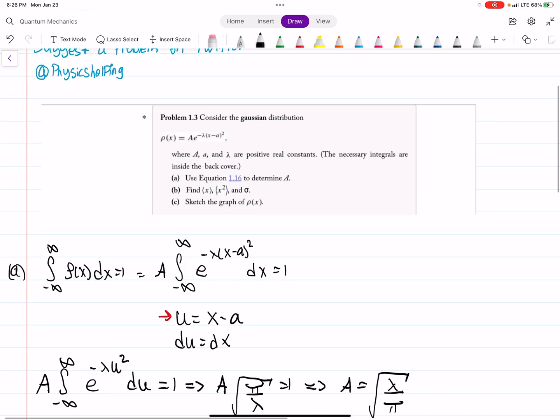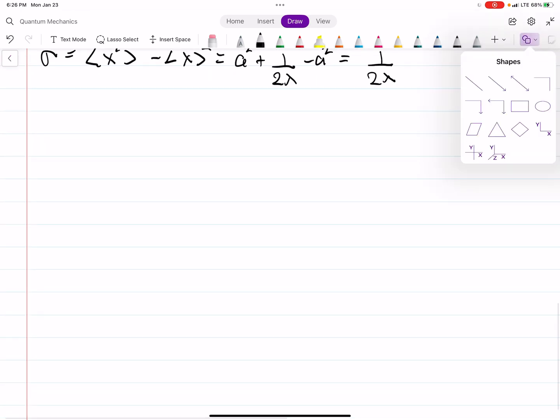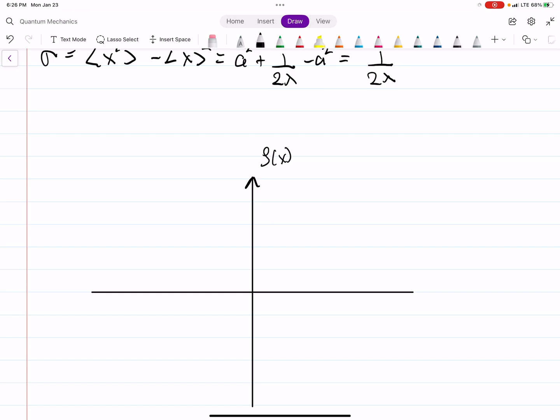And then for the last part, part C wants us to sketch our probability density. So let's do that really quick. So this is going to look like, so this is a probability density. This is x. We know it's going to look like some sort of distribution. So let's just do this.